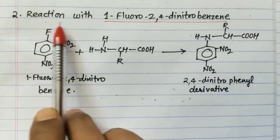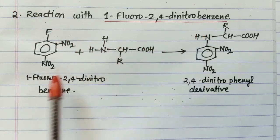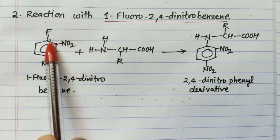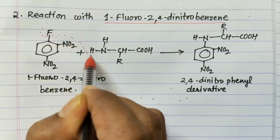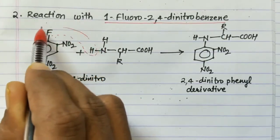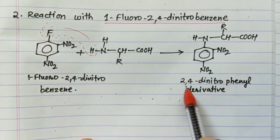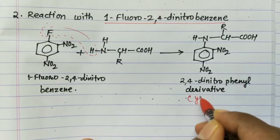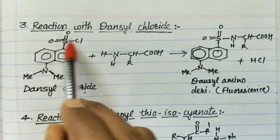Second reaction is the reaction with 1-fluoro-2,4-dinitrobenzene (FDNB). When an amino acid is reacted with 1-fluoro-2,4-dinitrobenzene, the amino group reacts with the phenyl ring — HF is eliminated in a condensation reaction — to form the 2,4-dinitrophenyl derivative, which is yellowish in color.